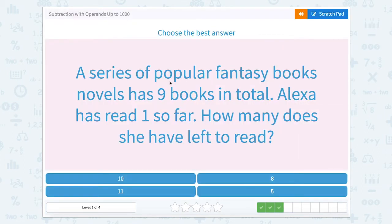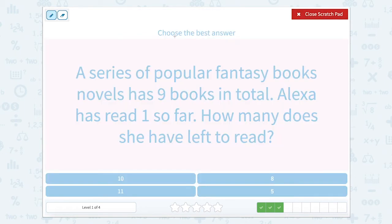A series of popular fantasy book novels has nine books in total. Alexa has read one so far. How many does she have left to read? Alexa has nine total books and she read one. So nine minus one equals how many? Nine minus one equals eight. So Alexa has eight books left to read.